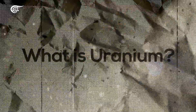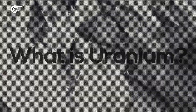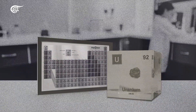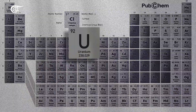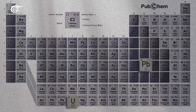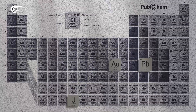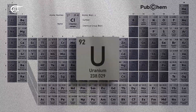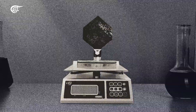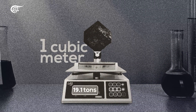What is uranium? Uranium is a radioactive element found in nature. It has a somewhat silver color, a higher density than lead by about 70%, and a lower density than gold. Its atomic number is 92, and each cubic meter of uranium weighs 19.1 tons.